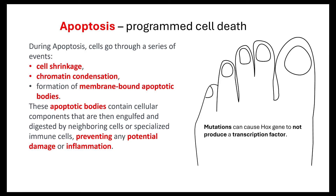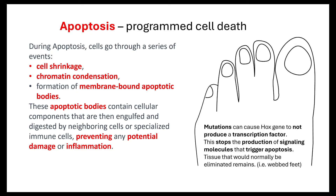So what happens when something goes wrong? A mutation can cause the hox gene to not produce a transcription factor. If a transcription factor is not produced, that will result in the production of a signaling molecule stopping. That signaling molecule should be triggering apoptosis, so if it's not being produced, it's not going to trigger apoptosis. That means tissue that would normally be eliminated actually remains. So if people have, for example, webbed feet or webbed hands, that is showing you where a mutation has occurred which is stopping the production of a signaling molecule.